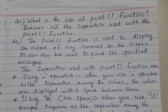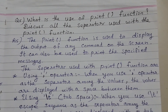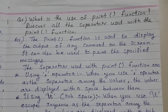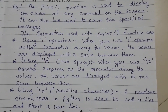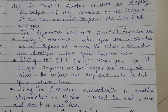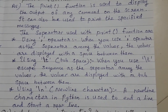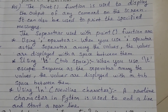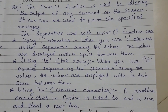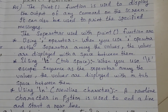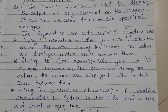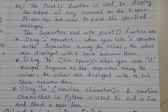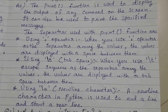What is the use of the print function? Discuss all the separators used with the print function. The print function is used to display the output of any command on the screen, and can also print specified messages. The separators used with the print function are: using comma operator — values are displayed with a space between them; using backslash T (tab space) — values are displayed with a tab space between them; using backslash N (new line character) — used to end a line and start a new line.